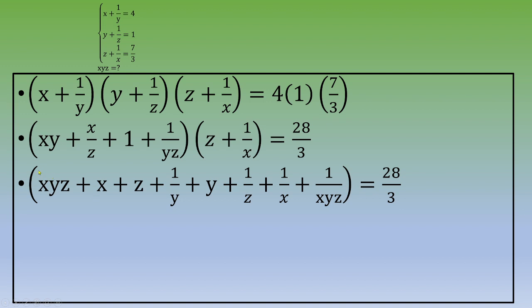Let's rearrange things. So this is xyz plus 1 over xyz plus x plus 1 over y plus y plus 1 over z plus z plus 1 over x equals 28 over 3.